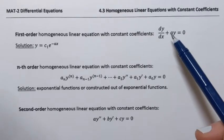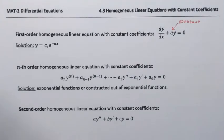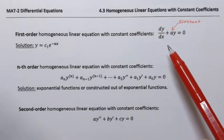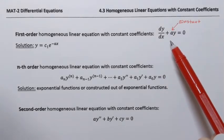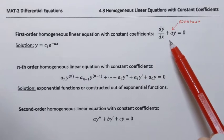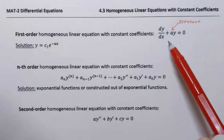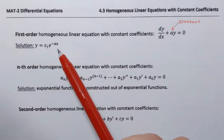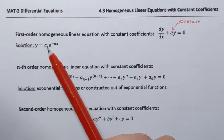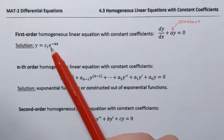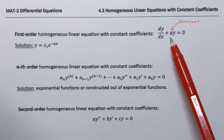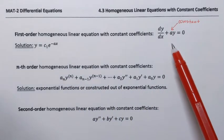In this equation, a is the constant. If we try to solve this equation — either as a separable equation or using an integrating factor — either way we're going to obtain the following solution, which is an exponential function. So c1 is the arbitrary constant and it's e to the power negative ax, where that a is the same constant from our equation.